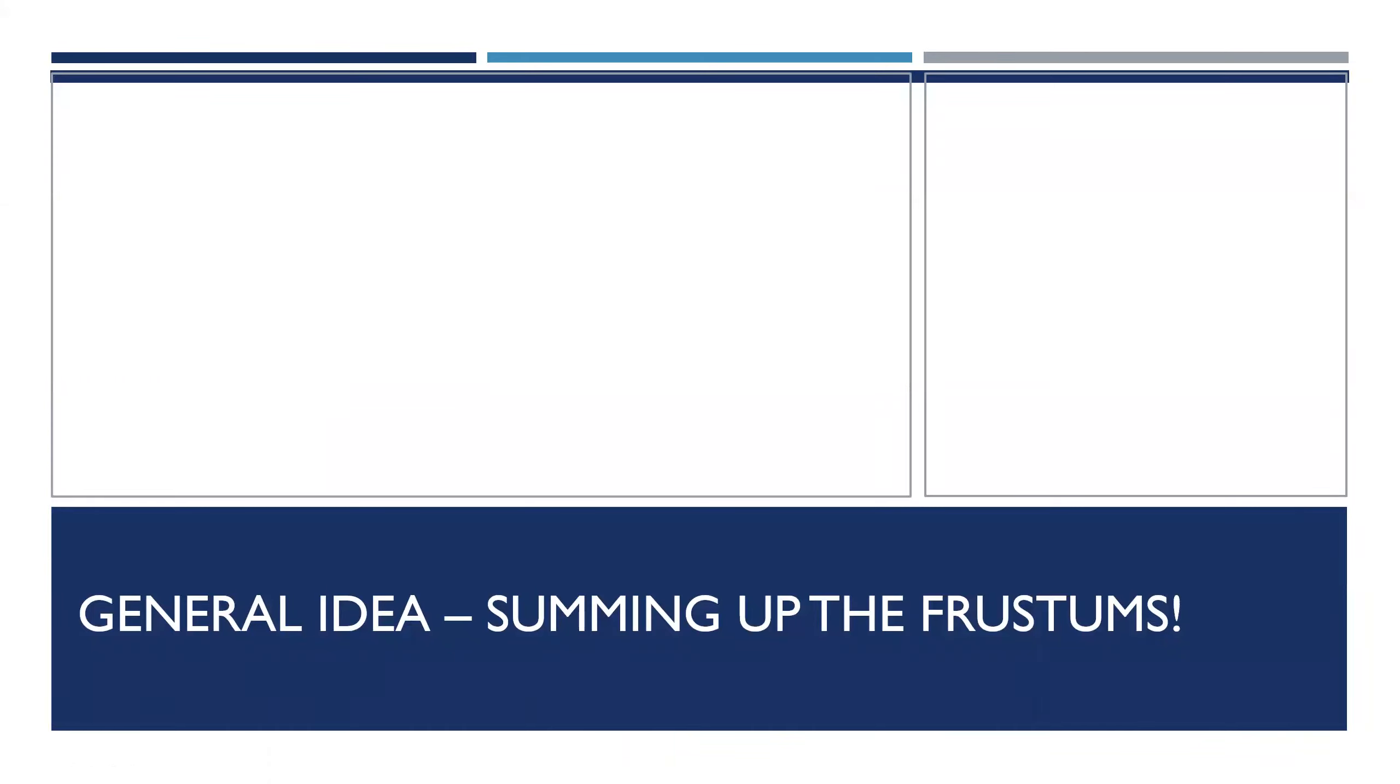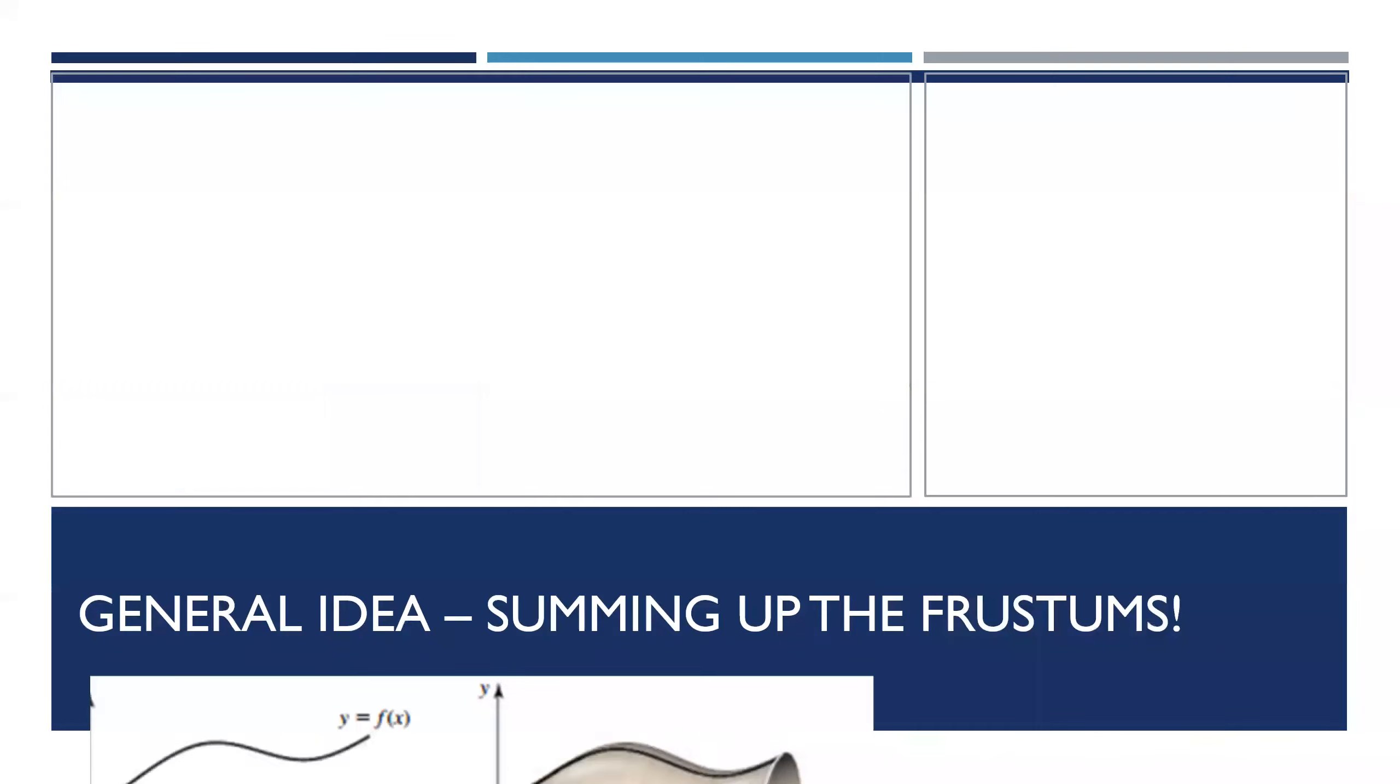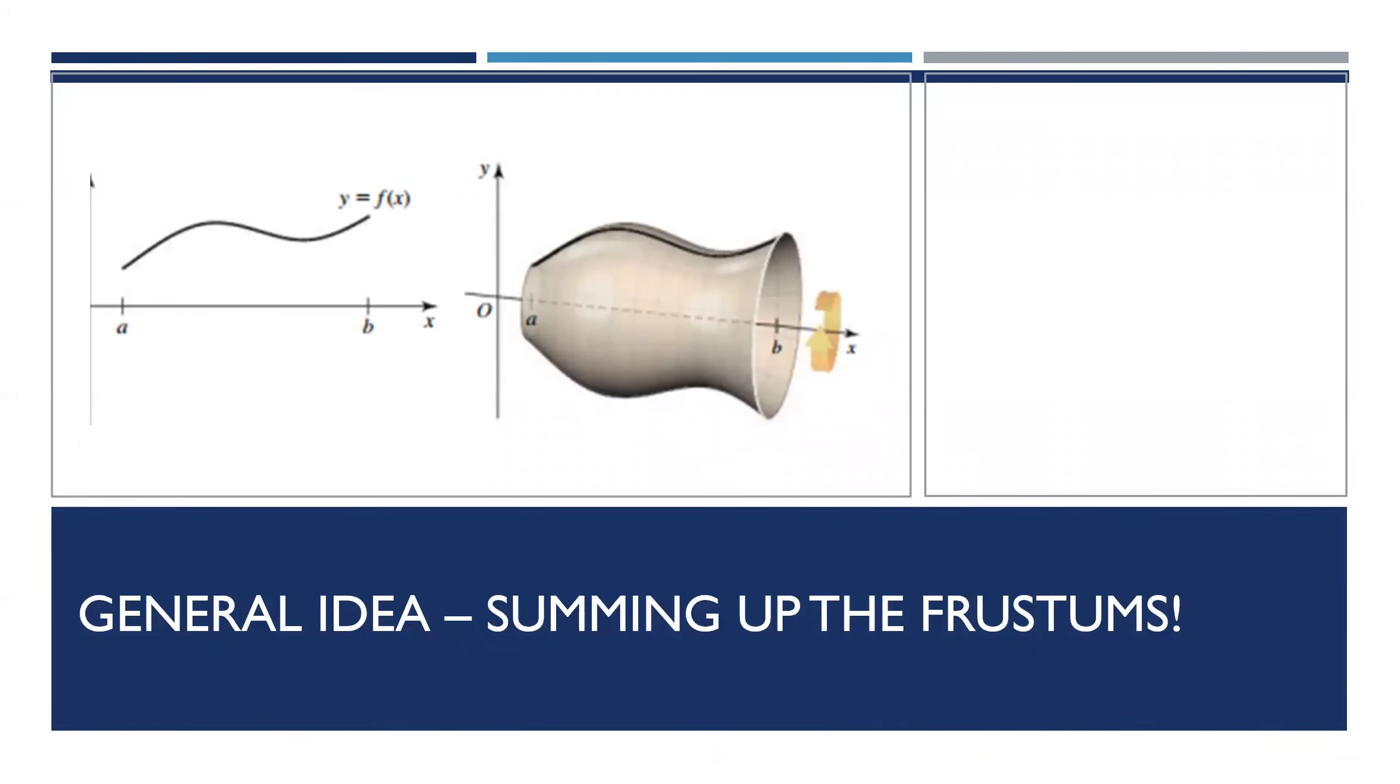The general idea is for us to have a function y equals f of x and then we are going to revolve it about some axis of rotation to get a solid. We want to know what's the surface area, meaning the boundary of that 3D shape on the outside.